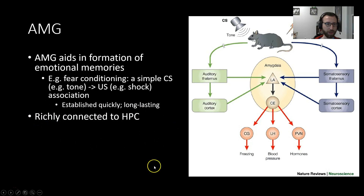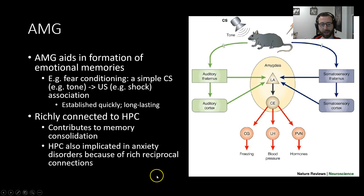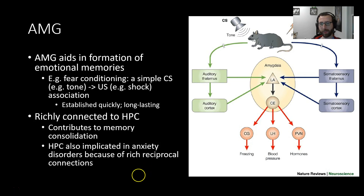As mentioned earlier, the amygdala is richly connected to the hippocampus, placing it solidly in the memory formation circuit and contributing to memory consolidation. The hippocampus is also implicated in anxiety disorders because of the rich reciprocal connections it shares with the amygdala and the extended amygdala. That's it for our intro section on anxiety and impulsivity, and we will see you next time.